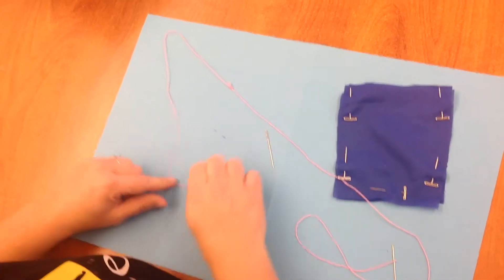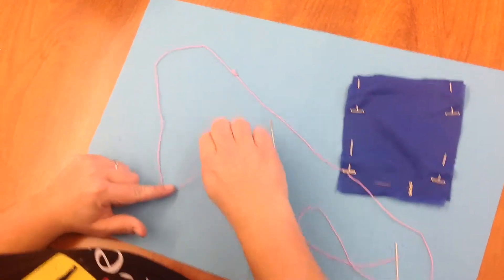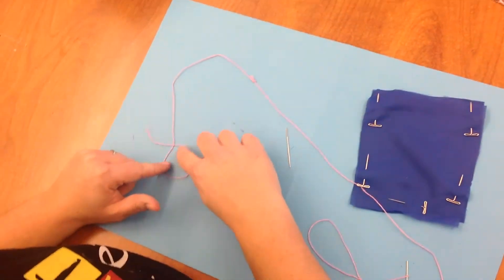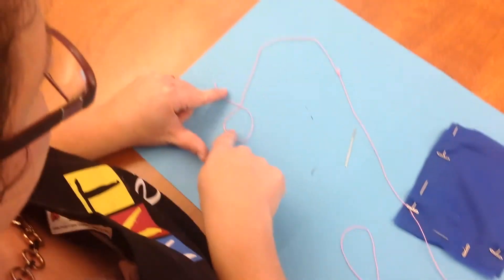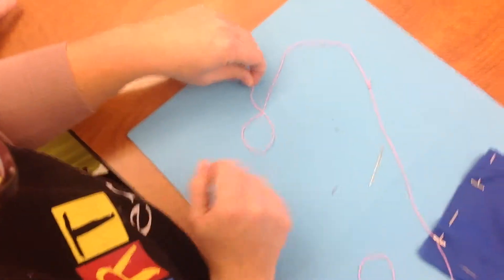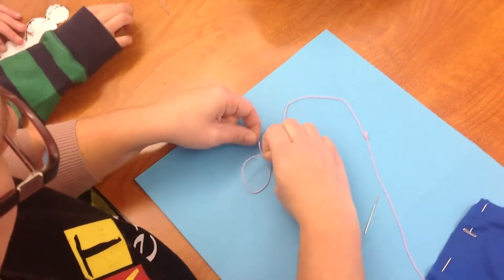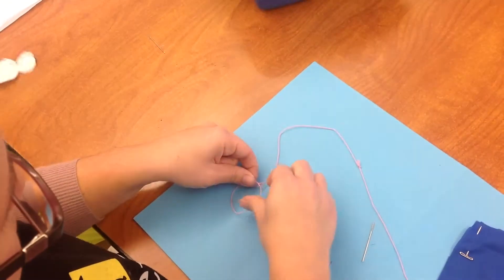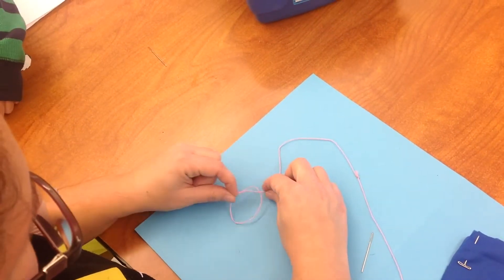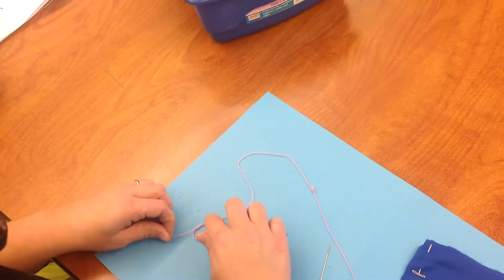you take the end that you're knotting, wrap it around so you have a little X in a loop. Take this end, go behind the loop, and pull both parts. It kind of looks like a pretzel while you're pulling.